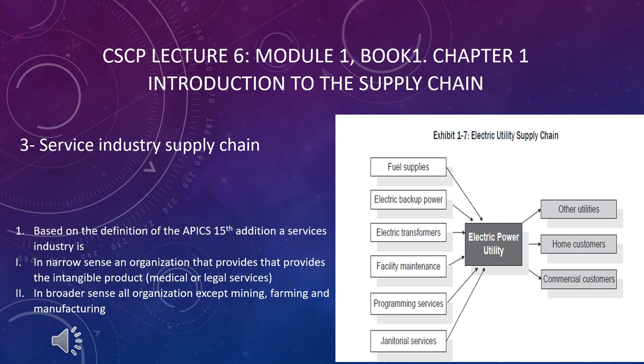Number three: service industry supply chain example. Based on the definition of APICS 15th edition, a service industry in a narrow sense is an organization that provides intangible products like medical and legal services, warehousing, and logistics. In a broader sense, it refers to all organizations except mining, farming, and manufacturing.